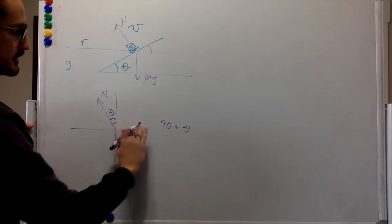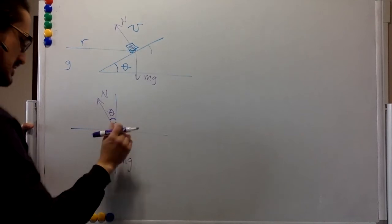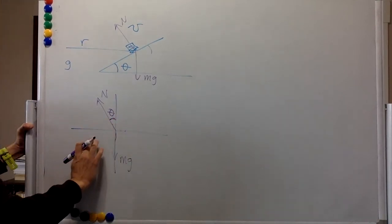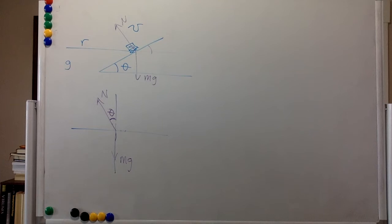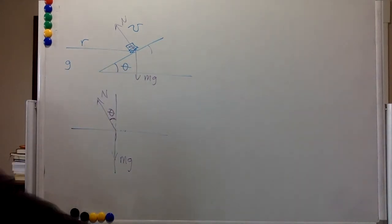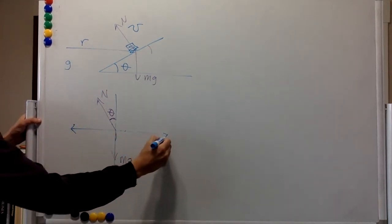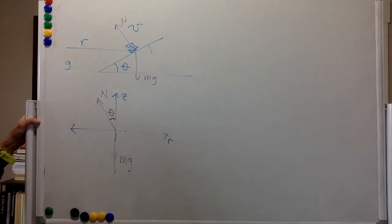All right, so we can remove this and that. So we have our angle theta over there, same as this one. So this is the radial direction or the radial axis, and this is the z axis.